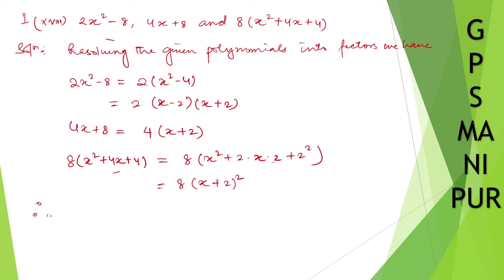Therefore, the HCF of the given polynomials: looking at the factors, the common numerical factor among 2, 4, and 8 is 2. The common factor (x plus 2) appears in all three. So the required HCF is 2(x plus 2).